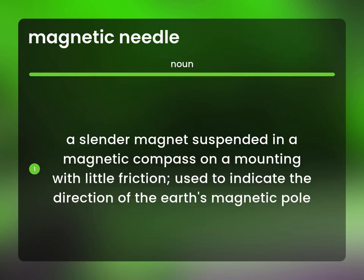A slender magnet suspended in a magnetic compass on a mounting with little friction. Used to indicate the direction of the Earth's magnetic pole.